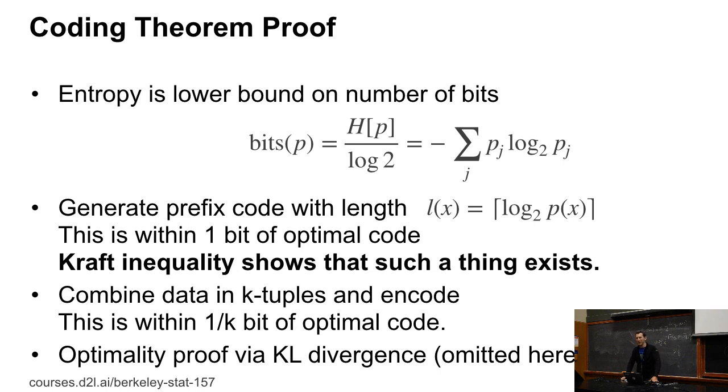Well, what we can do is we can just combine the data into K tuples. Right? So that will drive all the probabilities down to something much smaller. But now, since I'm combining K tuples, the rounding error of up to 1 will now get split over K probabilities. So that drives my rounding error to 1 over K rather than 1. If I make those K tuples long enough, then everything works out fine.